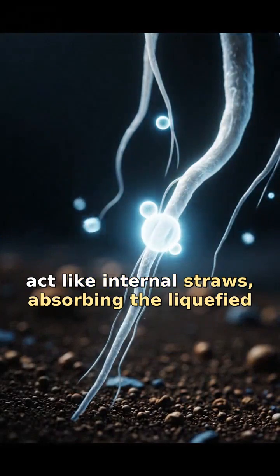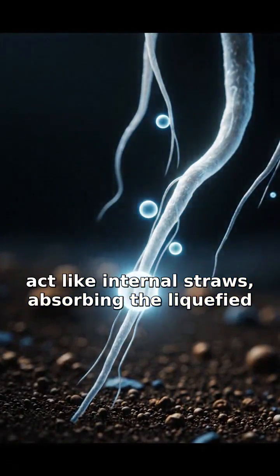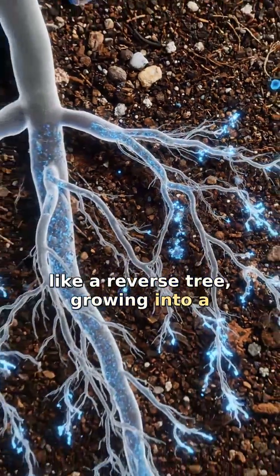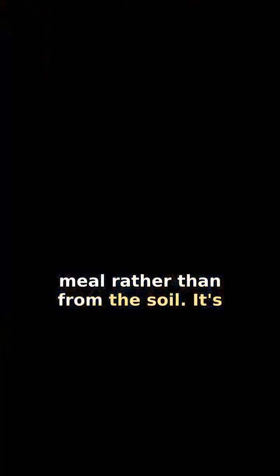These roots act like internal straws, absorbing the liquefied bone directly into the worm's body. It's like a reverse tree, growing into a meal rather than from the soil.